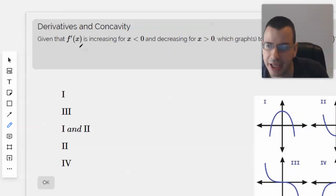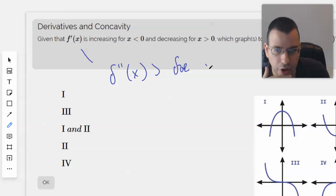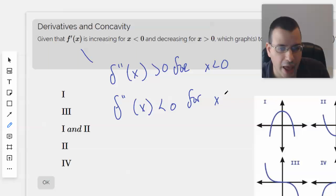So when they're saying that f prime of x is increasing, what they're saying is f double prime of x is greater than 0 for x less than 0, and f double prime of x less than 0 for x greater than 0. So this is talking about concavity here.